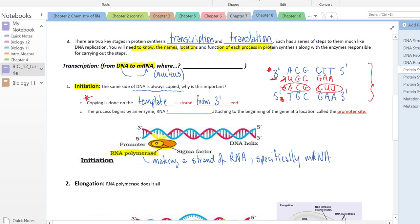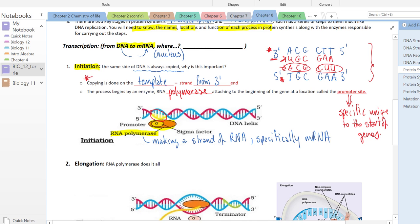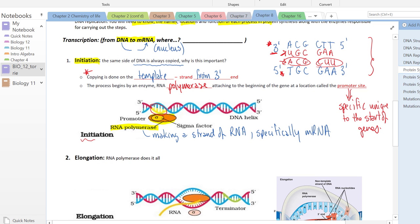The process begins by the enzyme RNA polymerase, which attaches to the beginning of the gene at a location called a promoter site. This is a very specific sequence, unique to the start of each gene, that signals where the RNA polymerase would attach. Right here highlighted in yellow we have this promoter sequence. RNA polymerase attaches to that, and unlike DNA replication, RNA polymerase does it all.